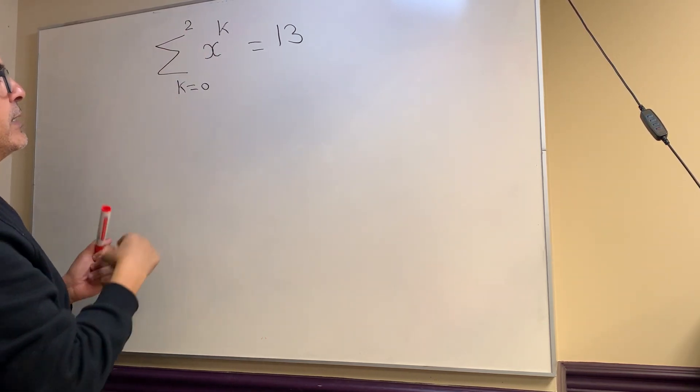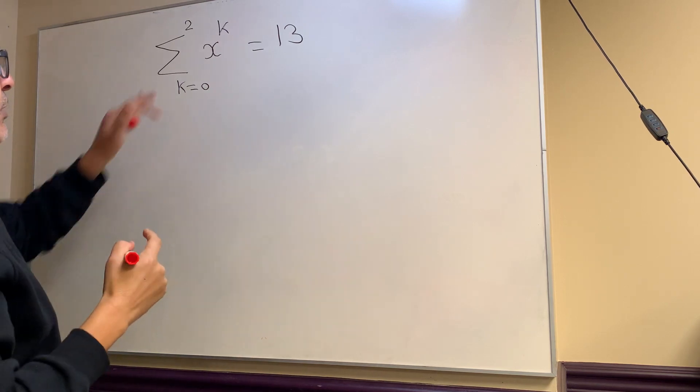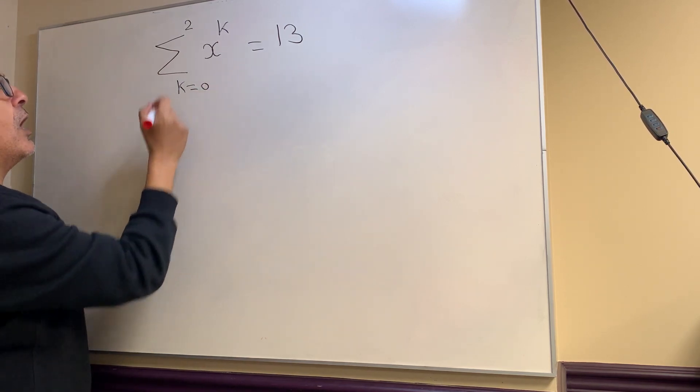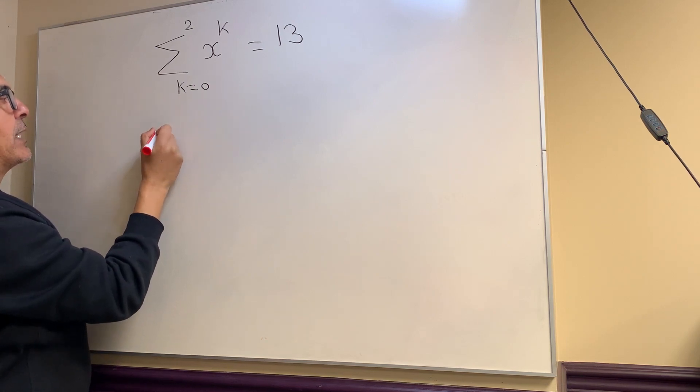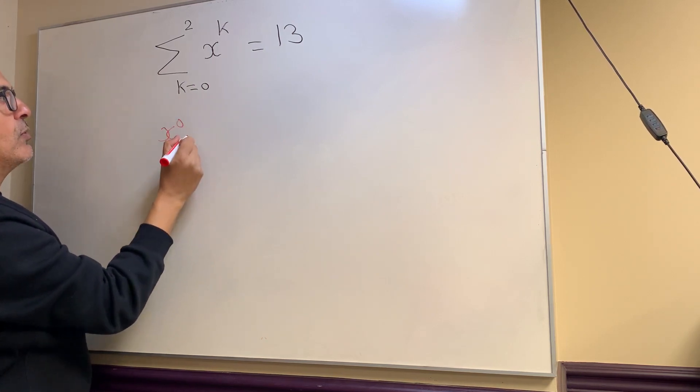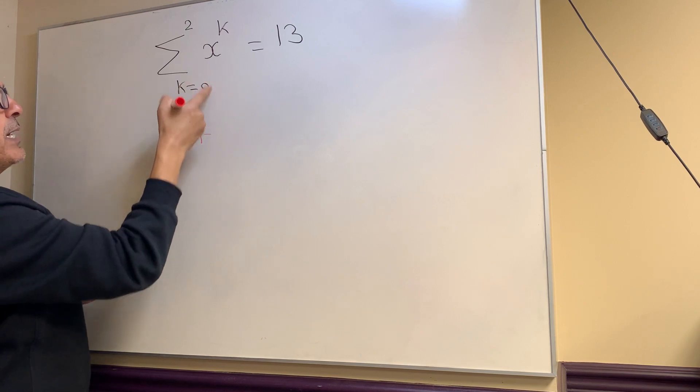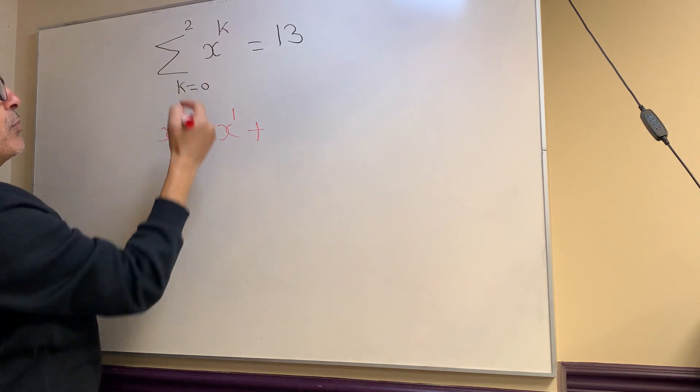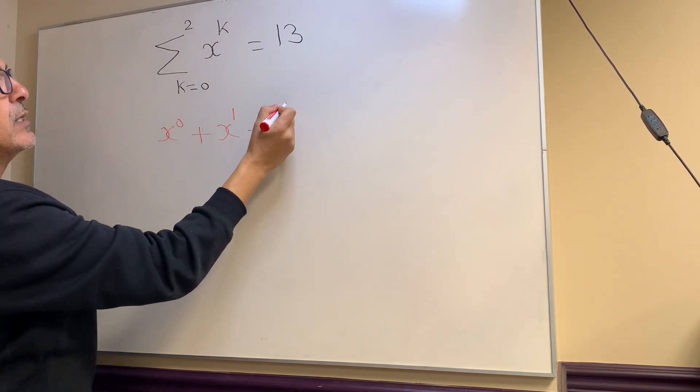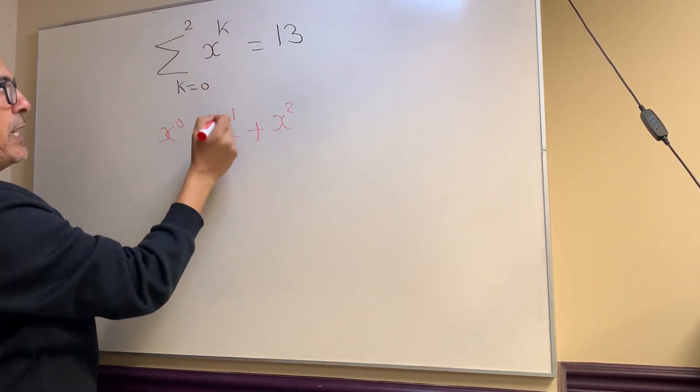What you want to do is expand this sigma notation. Basically, the sigma notation is the summation. You sub in 0 for k to get x^0, then plus you sub in the next number which is 1 to get x^1, plus the last number which is 2 to get x^2.